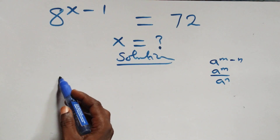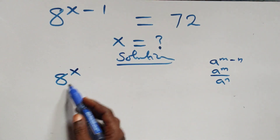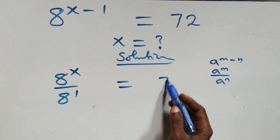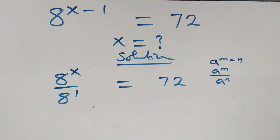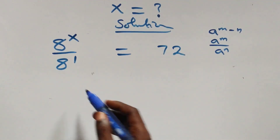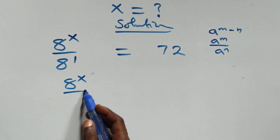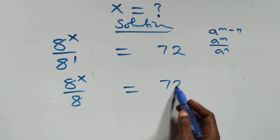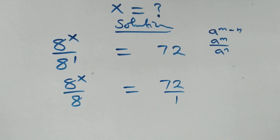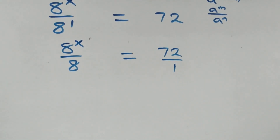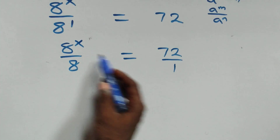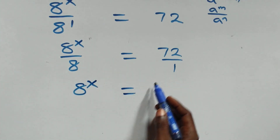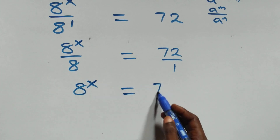At this point we have 8 raised to power x over 8 raised to power 1 equals 72 on this side. This is the same thing as 8 raised to power x over 8 raised to power (n minus x). We cross multiply: 8 raised to power x times 1, which is the same as 8 raised to power x, equals 72 times 8 on this side.